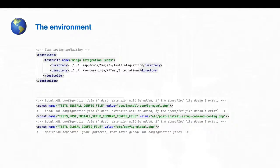First thing is phpunit.xml. I extracted just two parts that are the most important pieces in the phpunit.xml file. You can spot the test suites and you can see the constant names that are used by the integration test. I'd like you to remember that all the rest of the file is not so important — these two are the most important.